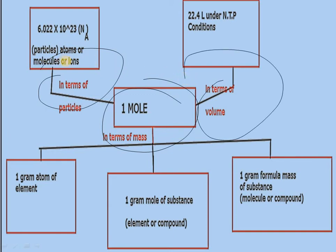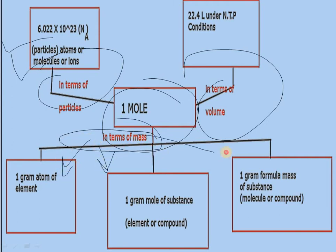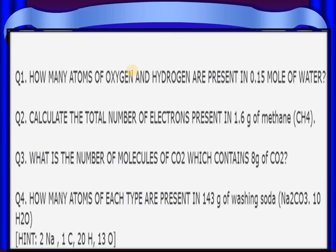In this lecture we discussed how to relate 1 mole in terms of particles - we did questions where in 1 mole there are Avogadro's number of particles, which can be atoms, molecules, ions, and electrons. We also discussed gram atomic mass, gram molecular mass, and gram formula mass in terms of mass. Then we studied volume in terms of moles. This flowchart will help you understand how to convert mass, and solve mole concept related questions.